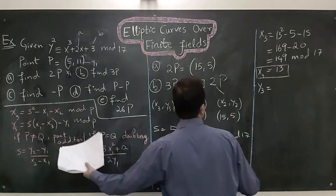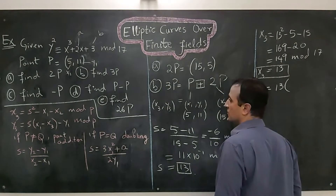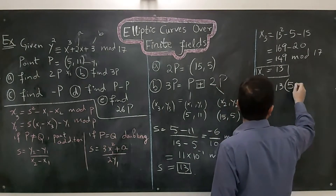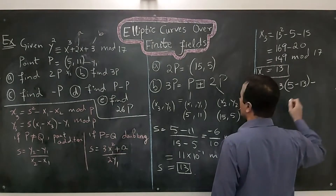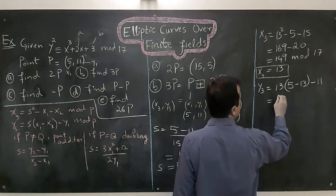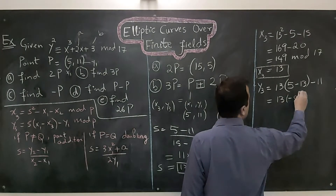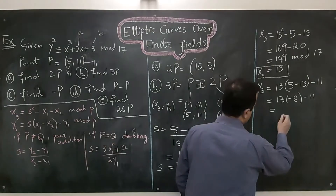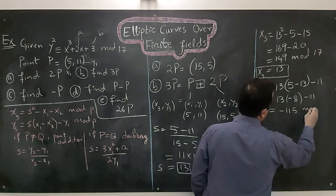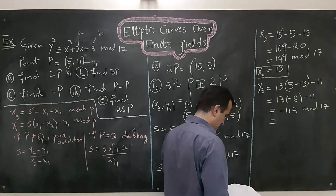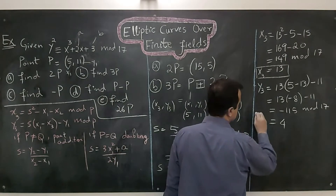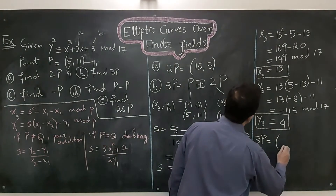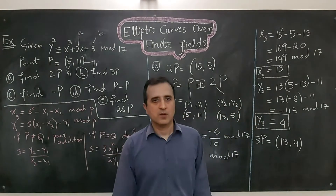Now y3 = s(x1 - x3) - y1 mod 17, which is 13 × (5 - 13) - 11 = 13 × (-8) - 11 = -104 - 11 = -115 mod 17, and y3 equals 4. So 3P = (13, 4).